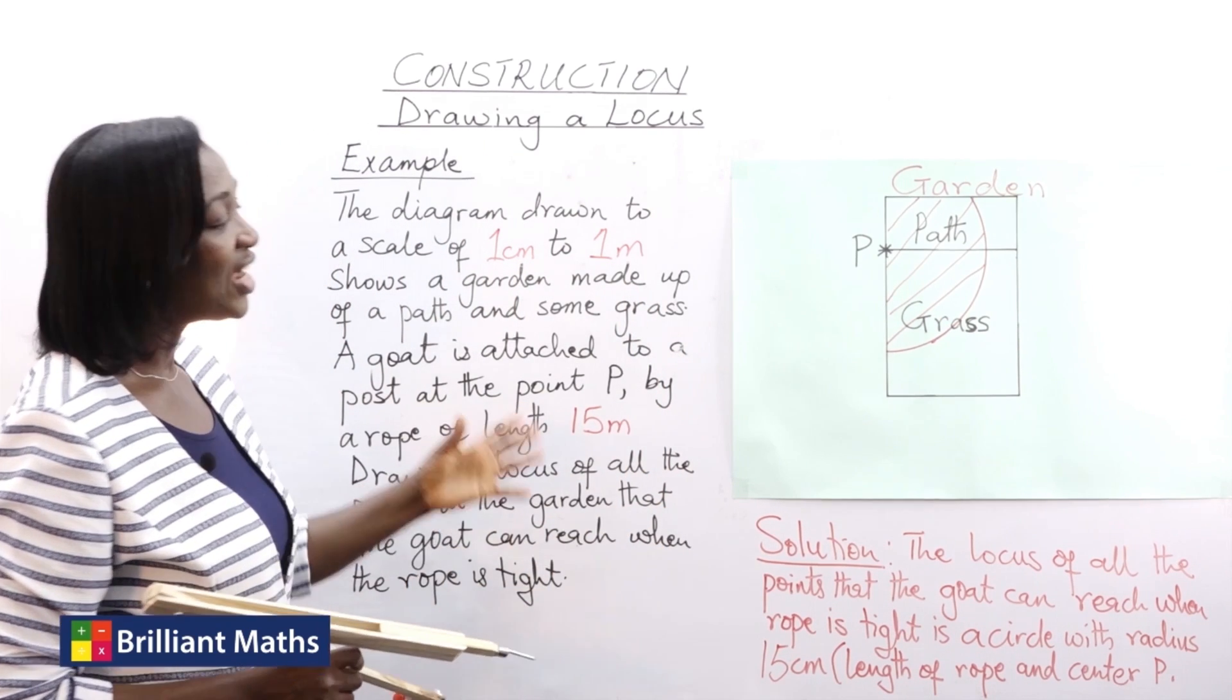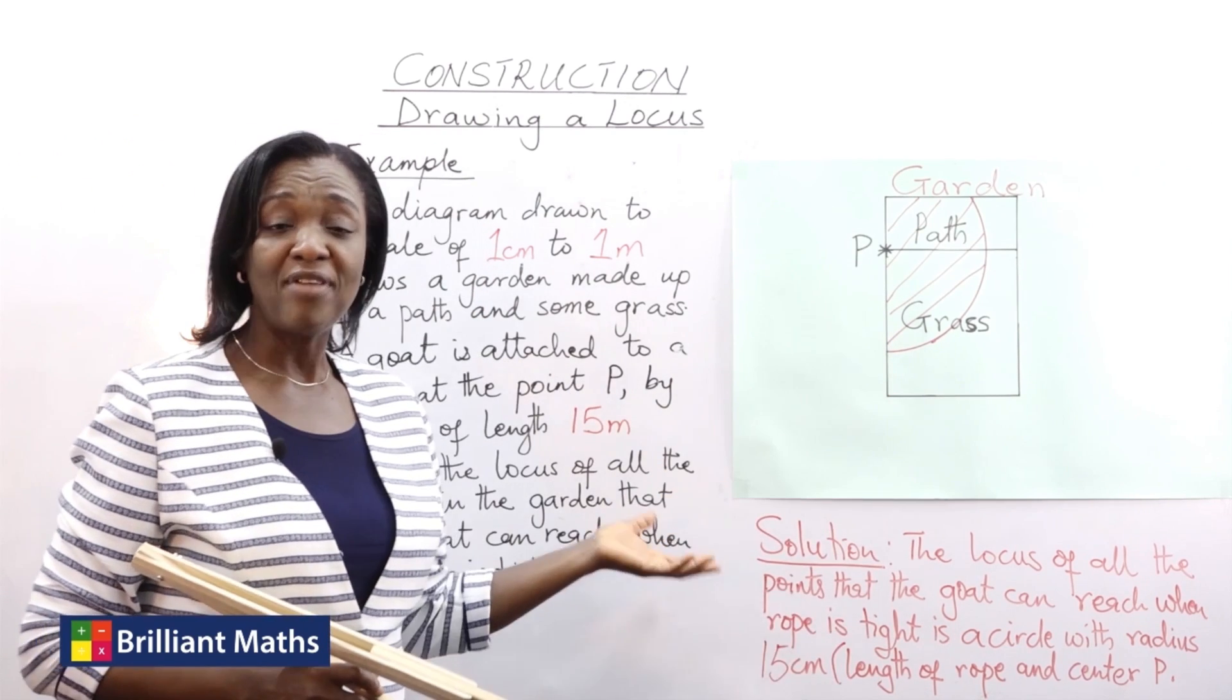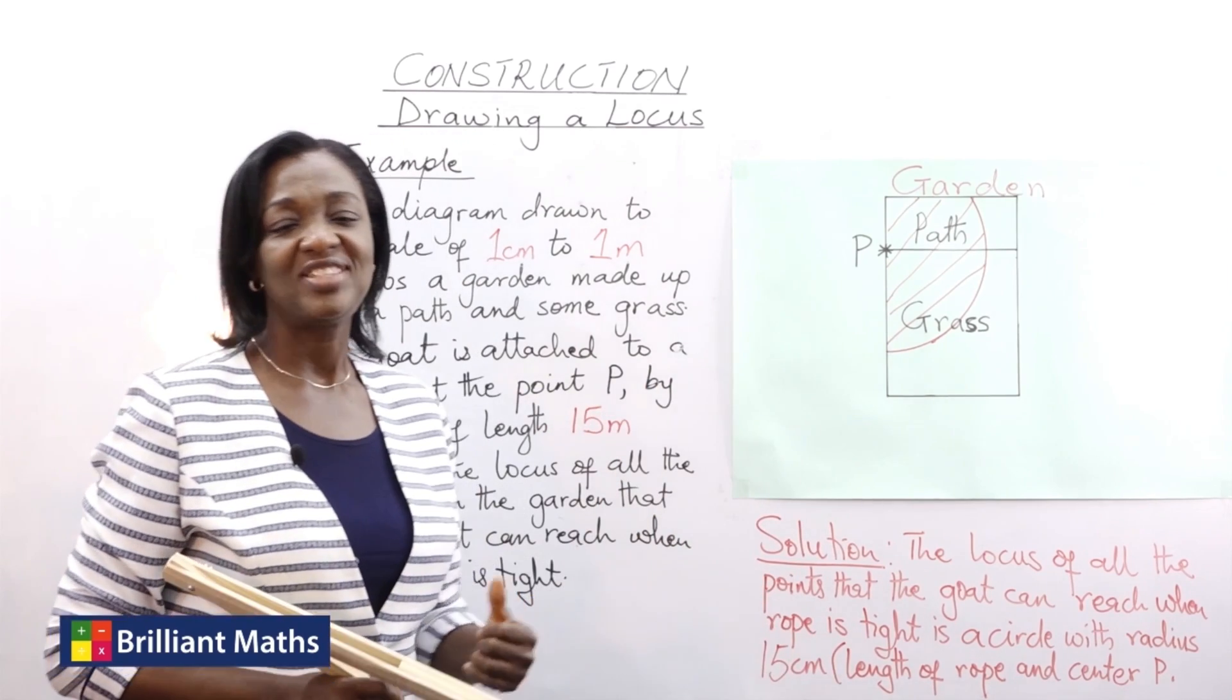So that's the locus of the points that the goat can reach within the garden when the rope is tied. For more of such examples get a copy of Brilliant Maths Module 7.